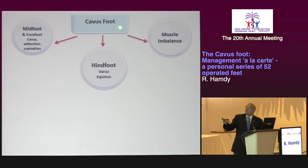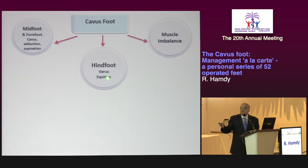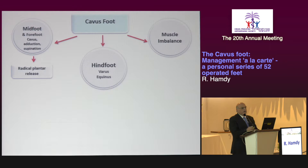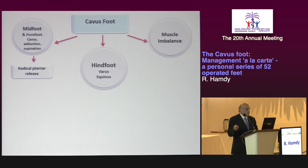Here's a diagram I like because it makes my approach simple. In the cavus foot, you must first address the midfoot and forefoot — cavus, adduction, and supination. After correcting this, you go to the hindfoot and address the varus and equinus. After finishing the hindfoot, you then address muscle balance. So we start with the midfoot and forefoot. The first thing I do is a radical plantar release — and by radical I mean it's not a small incision where you only release the plantar fascia.